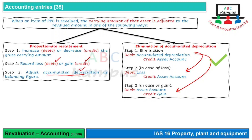Commonly जो method use किया जाता है वो elimination of accumulated depreciation method है, और इसी method की base पर exam के अंदर questions होते हैं। Elimination method इसलिए ज्यादा बेहतर है क्योंकि अगर exam में information कम भी हो तो यह use किया जा सकता है। Proportionate restatement के लिए gross carrying amount का data जरूरी होता है, जबकि elimination method में सिर्फ net value given हो तो भी value adjust हो सकती है।